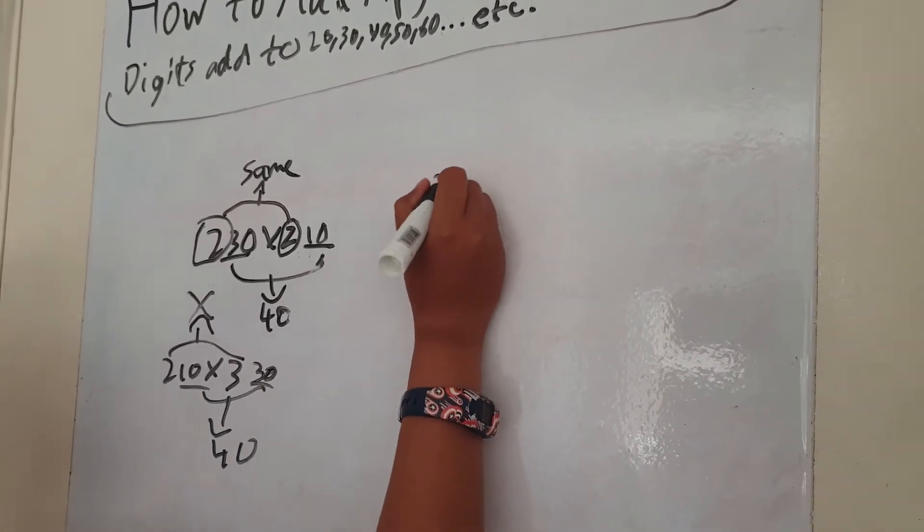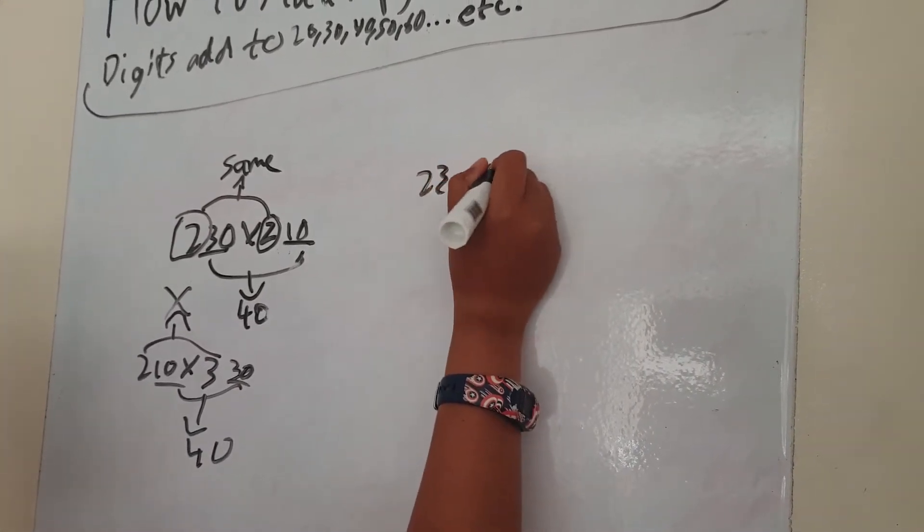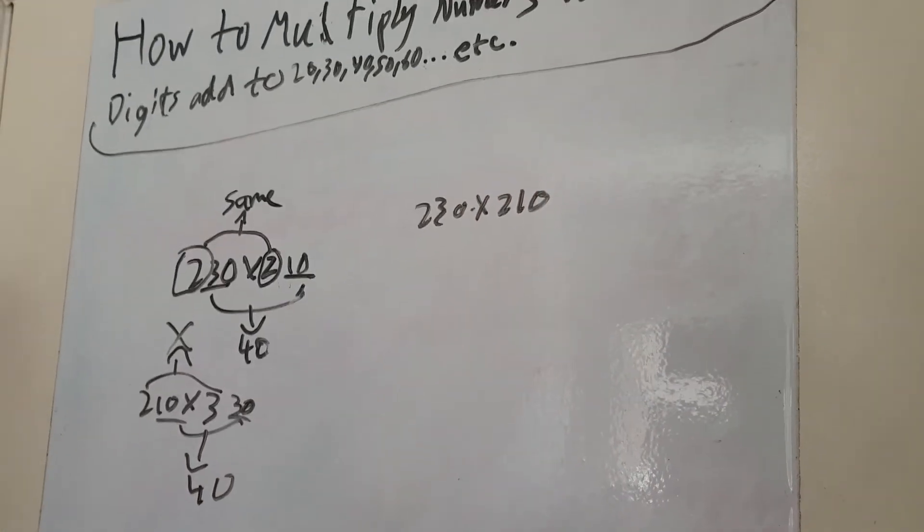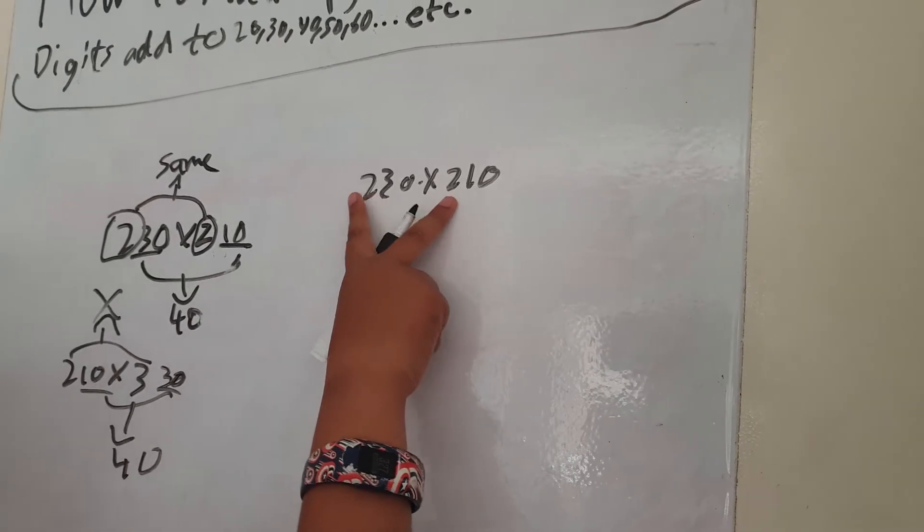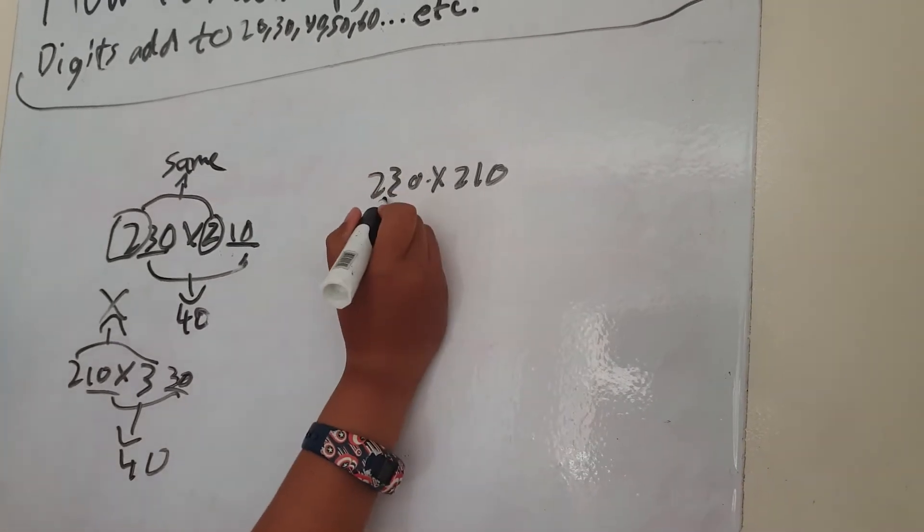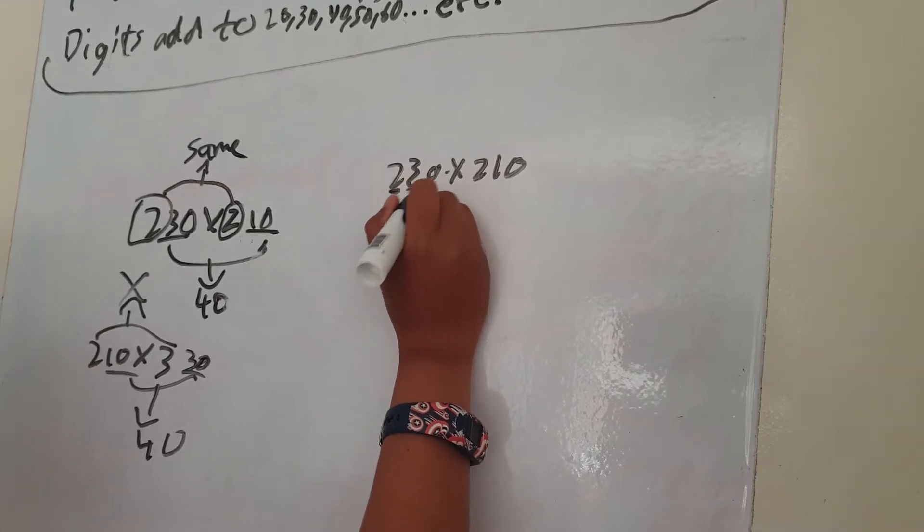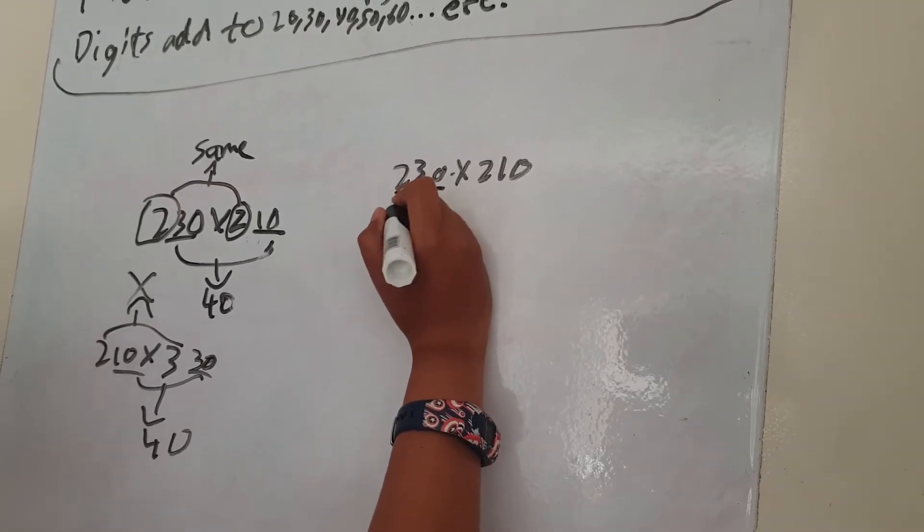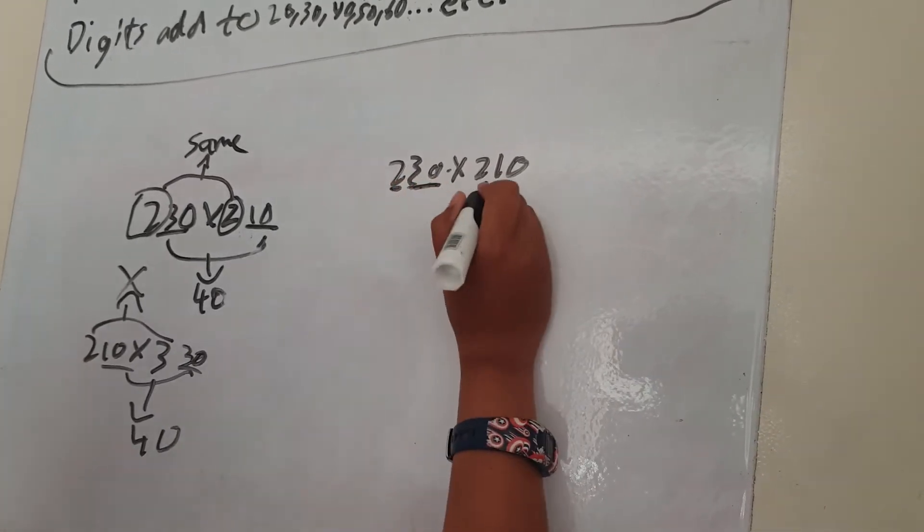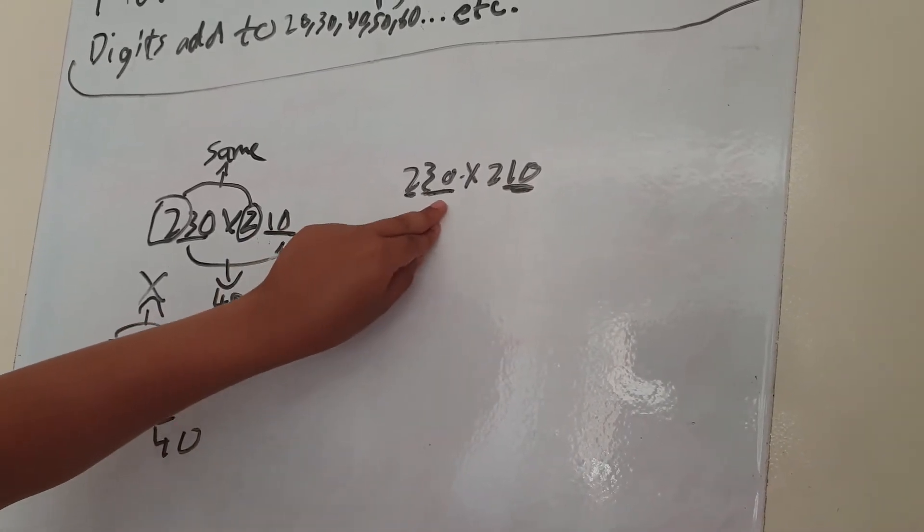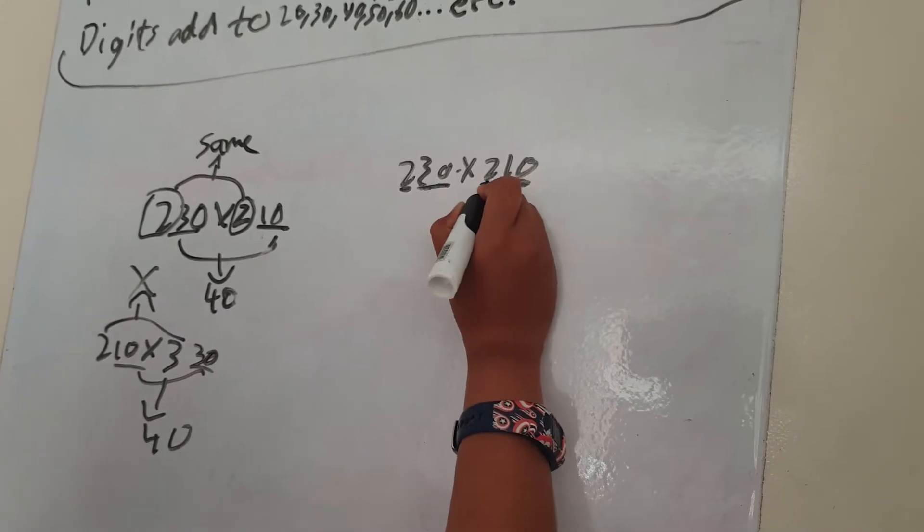All right, so now let's do this equation. 230 times 210. The first thing you have to do is, so there's the number bit and the adding bit. I'm just going to call this the first part and this is the second part.